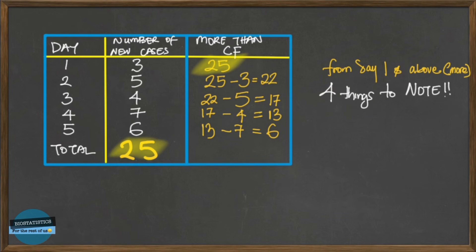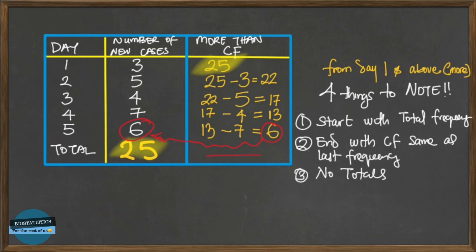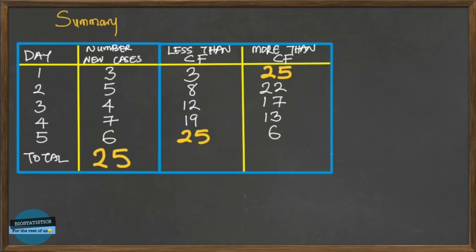There are four things to note about more-than cumulative frequency. First, we start with the total frequency as the highest cumulative frequency — that's why we started with 25. Second, we end with the last frequency, which here is six — this is how you can check your more-than cumulative frequency. Third, there are no totals. Fourth, the first cumulative frequency equals the total frequency.